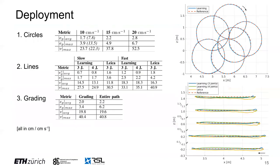To give you some idea about the achieved accuracies, here are some numbers. All numbers are averaged over five trajectories, except for the grading experiment. For circular trajectories, the average error is two to three centimeters, with a maximum error of four to seven centimeters, depending on end-effector velocity.